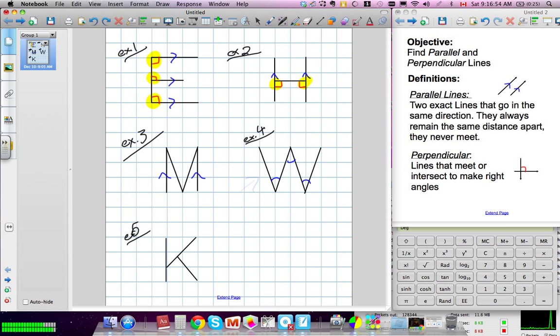And what about in K? No. No what? No parallel. No parallel? Any perpendicular? So, this isn't a 90 degree? No.